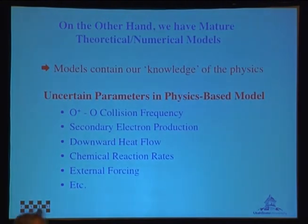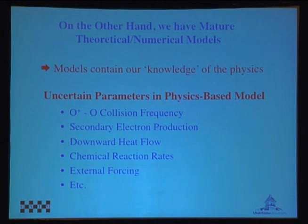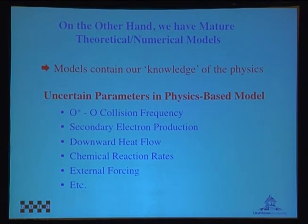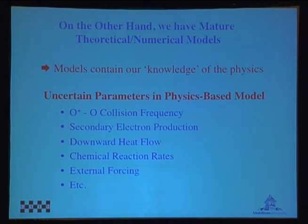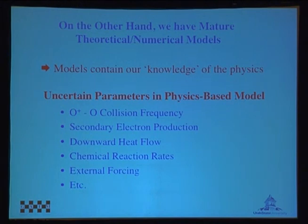On the other hand, we have very mature theoretical numerical models — for example, a numerical model of the ionosphere, the thermosphere, or the radiation belts. These models contain our knowledge of the physics, but not all the physics we know is really embedded in them. If you look in detail, there are many uncertain parameters in these physics-based models. For example, in the ionosphere, the O+ and O collision frequency is highly unknown — within maybe a factor of 1.5 to 2. Secondary electron production is highly unknown, as are downward heat fluxes, chemical reaction rates, and external forcing — all with large uncertainties that affect results very dramatically.